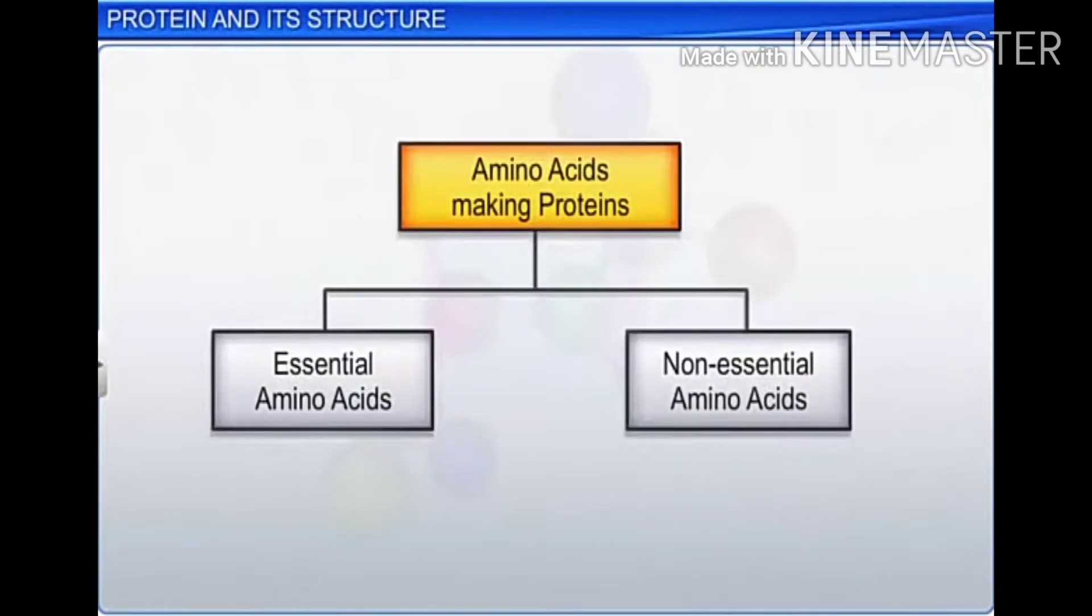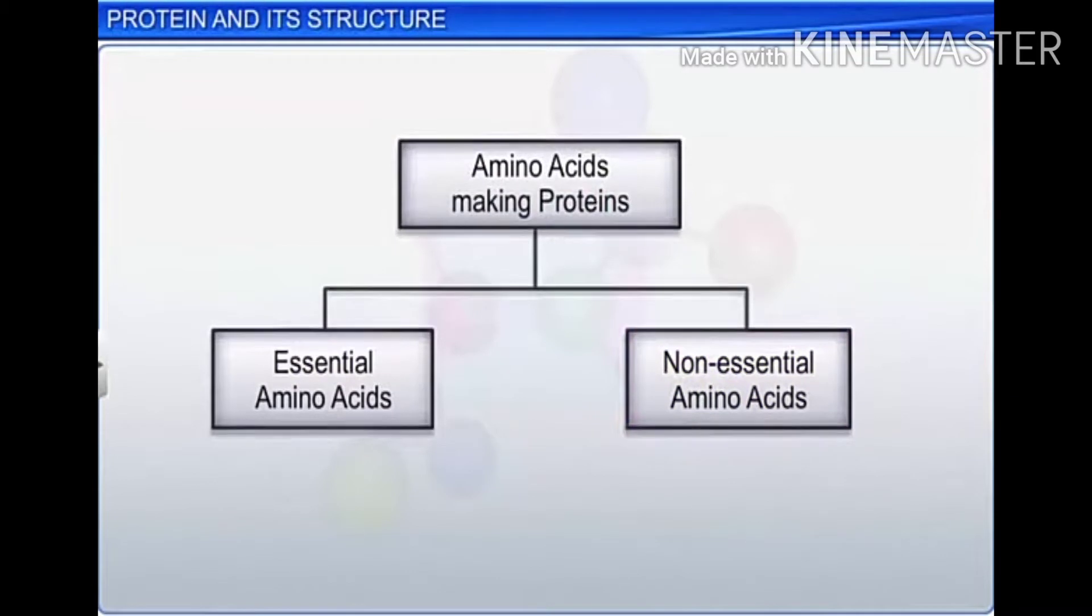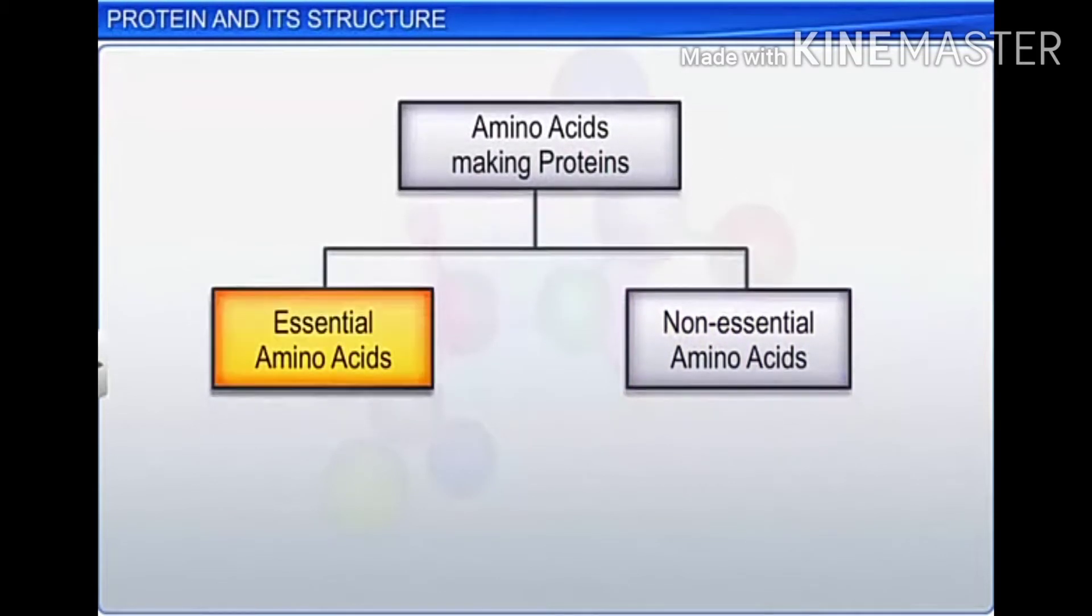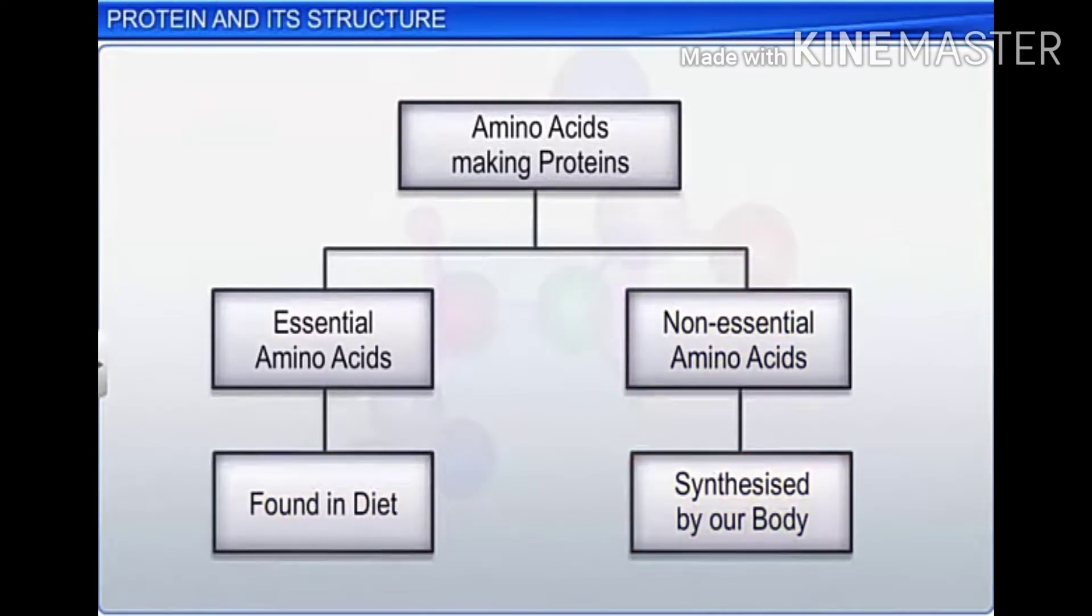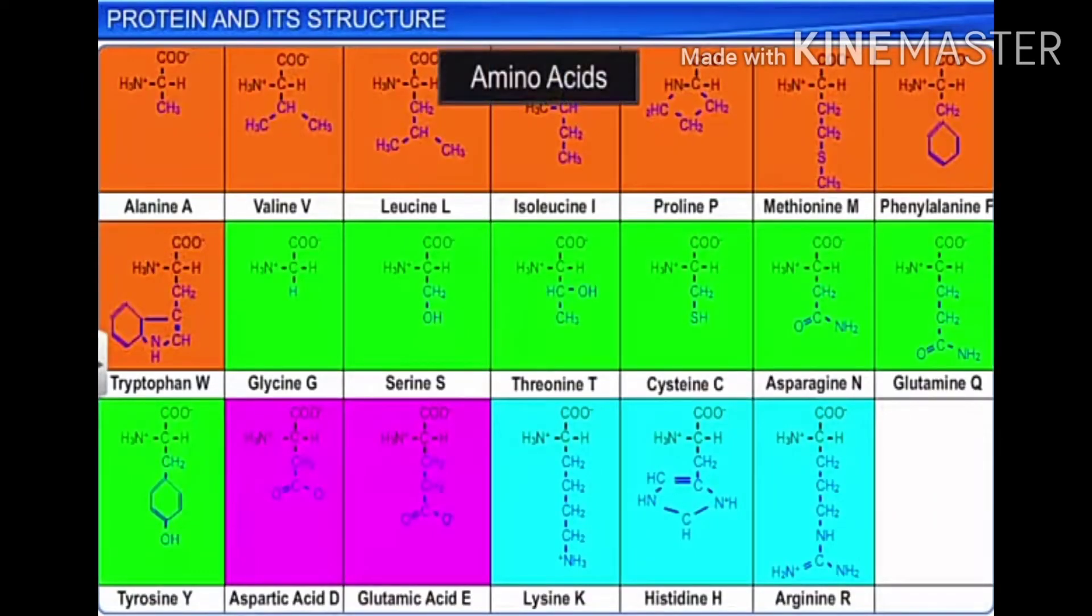Amino acids that go into the making of proteins can be essential or non-essential. Essential amino acids are found in our diet while non-essential proteins are synthesized by our body. There are 20 types of amino acids that come together to form proteins, and so they are also known as heteropolymers.